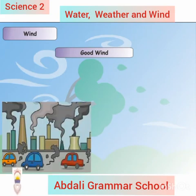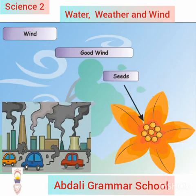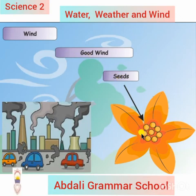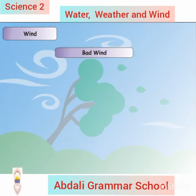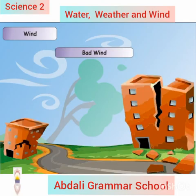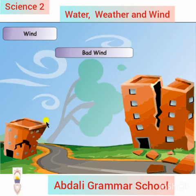Good wind: good wind can blow dirty air away from where people live. Good wind can also spread seeds so that plants grow. Bad wind: wind can also be bad. Bad wind can make buildings shake or even fall down.